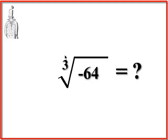Now you can take a cube root of a negative number because a negative times a negative is a positive, but times another negative is a positive times a negative is a negative. So when you multiply three negative numbers together, you're going to get a negative product.